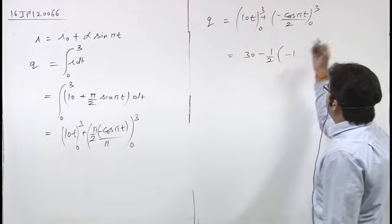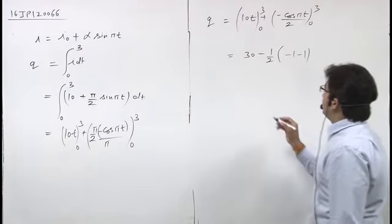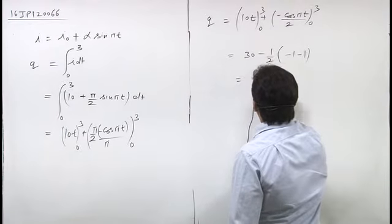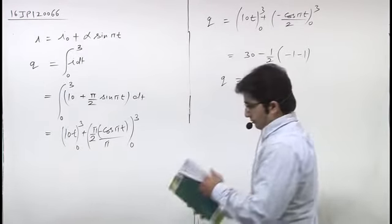Cos 3π is negative 1, then minus the value at 0 which is negative 1, so it equals 31 coulombs. So q equals 31 coulombs.